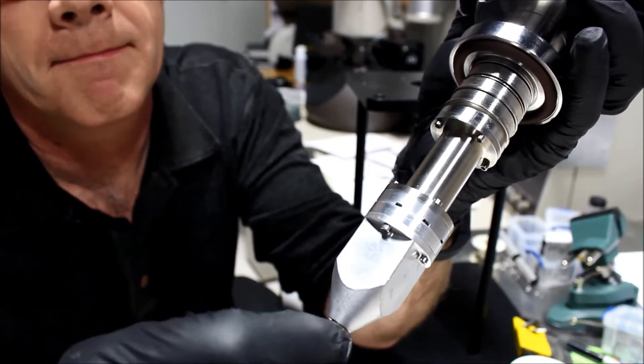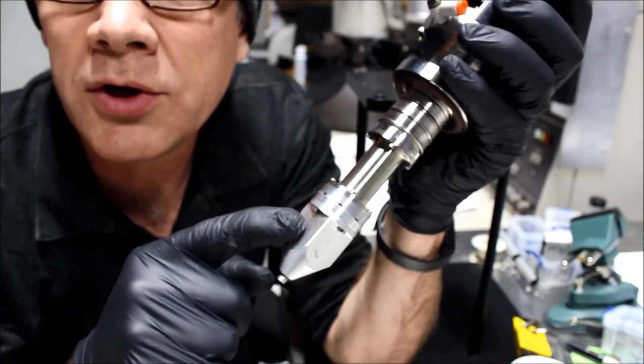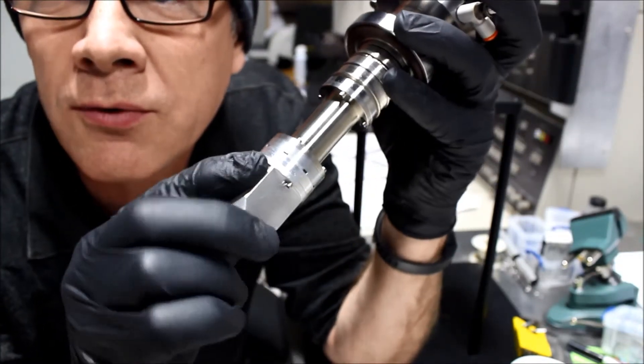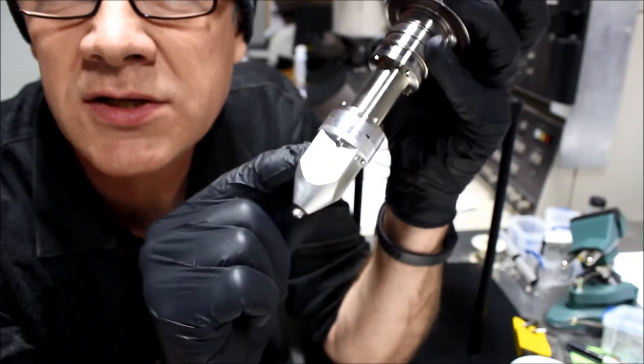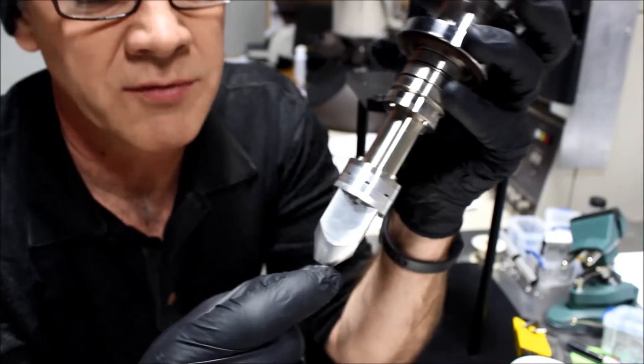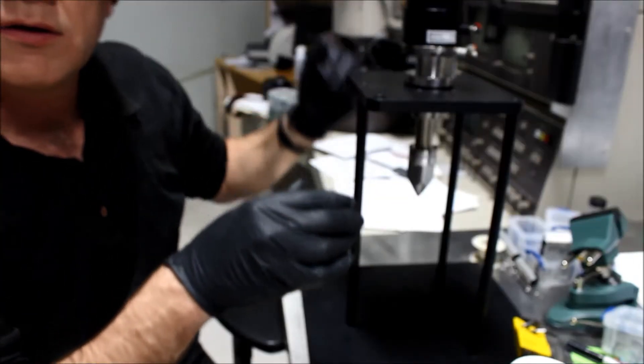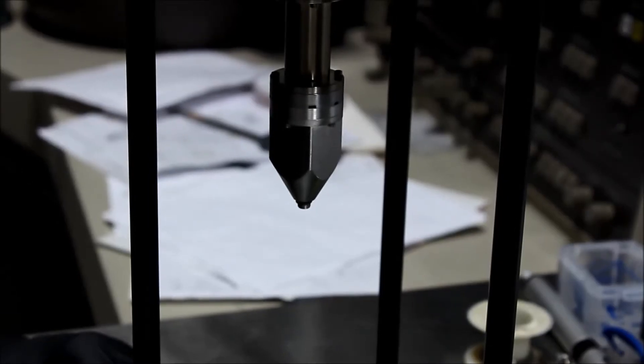Now all we need to do is remove these four little 2-56 socket head cap screws. The easiest way to do this is to place the GIS in a stand so you can have your hands free. It holds it vertically. Let's zoom in on that so you can get a little more view of it. There we go.